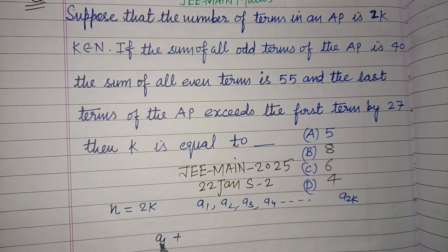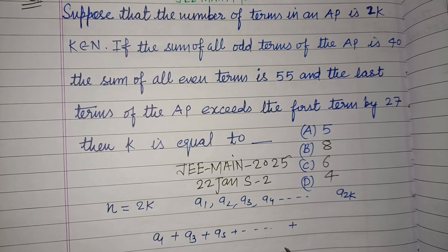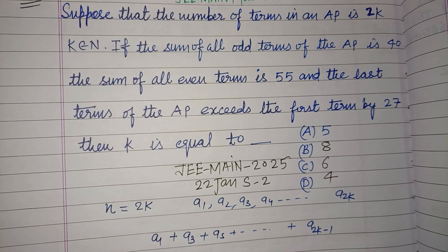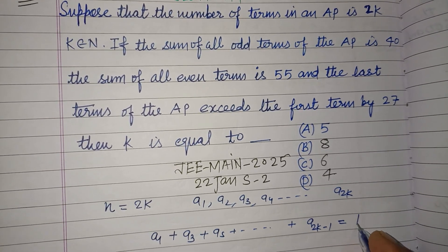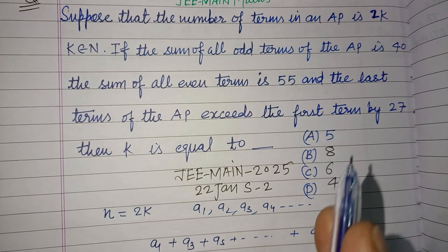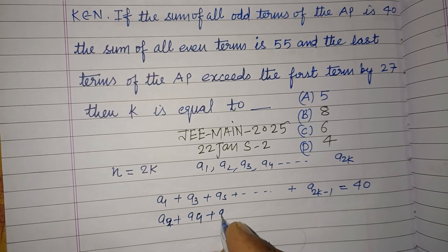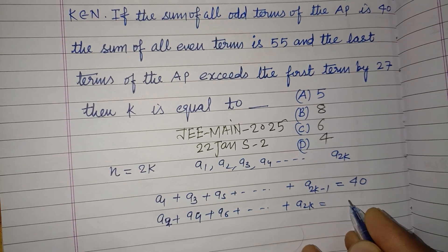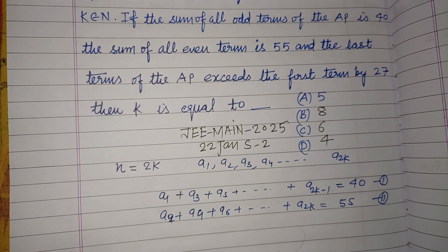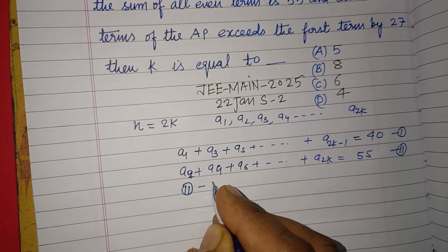The odd terms are a1, a3, a5, and so on up to a(2k-1), and their sum equals 40. The sum of all even terms — a2, a4, a6, and so on up to a2k — is 55. So this is equation one and equation two.